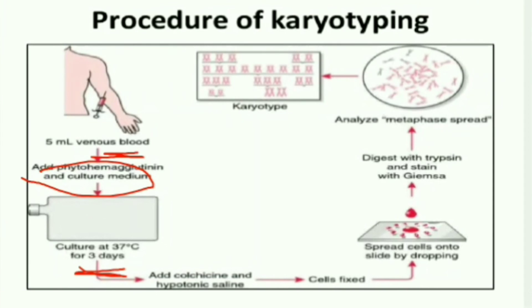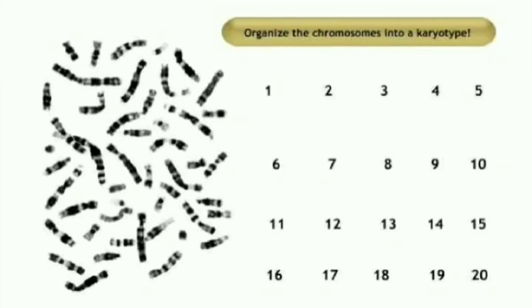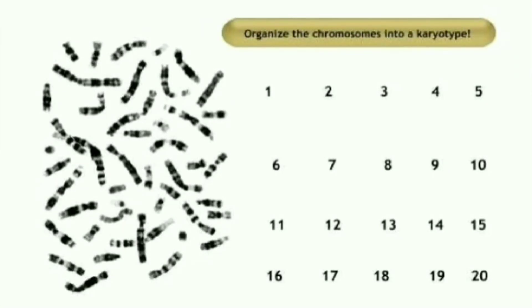The cells are spread onto a slide by dropping. After that, the slide is digested with an enzyme trypsin and stained with Giemsa stain. The metaphase spread is then analyzed, and that is how we get a karyotype. The last step is screening — organizing the chromosomes into a karyotype. Hope the concept of karyotyping is clear. Please subscribe to Biotech Simplified and like and share with your friends.